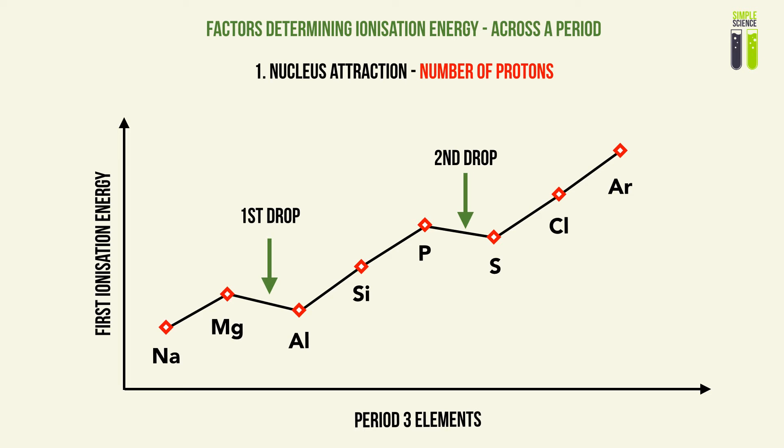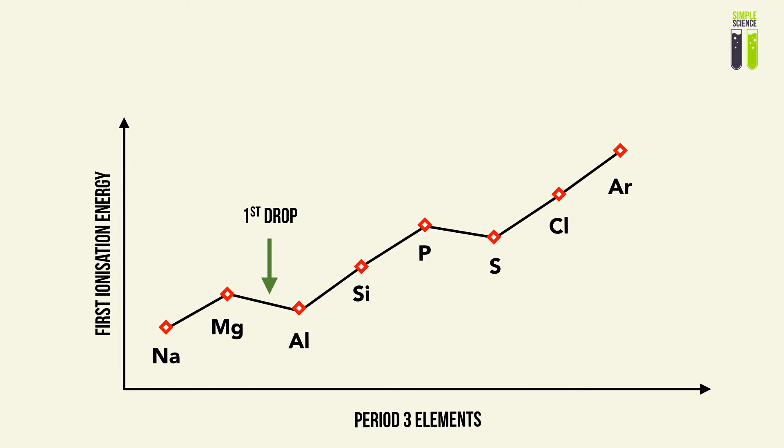The first drop, as you can observe, is from magnesium to aluminum. Why is the first ionization energy of aluminum less than that of magnesium, which is not predicted? So look at the first drop.